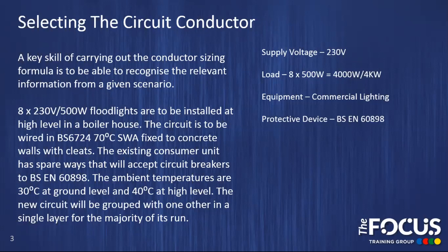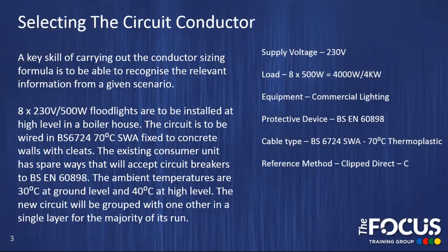We are then given the standard in this scenario, so we know we should be selecting a BS EN 60898, which hopefully we will recognize is a circuit breaker. We can also see in our scenario we have our cable type BS 6724 SWA 70 degree thermoplastic. Knowing the operating temperature of this cable type will help us choose the correct tables when we come to look in Appendix 4 of BS 7671. It tells us that our cable will be fixed to concrete walls with cleats, so we need to recognize that this is going to be clip direct or reference method C. Again, key to using the correct sections of the tables in Appendix 4. The rating factors given are for ambient temperature and for grouping.